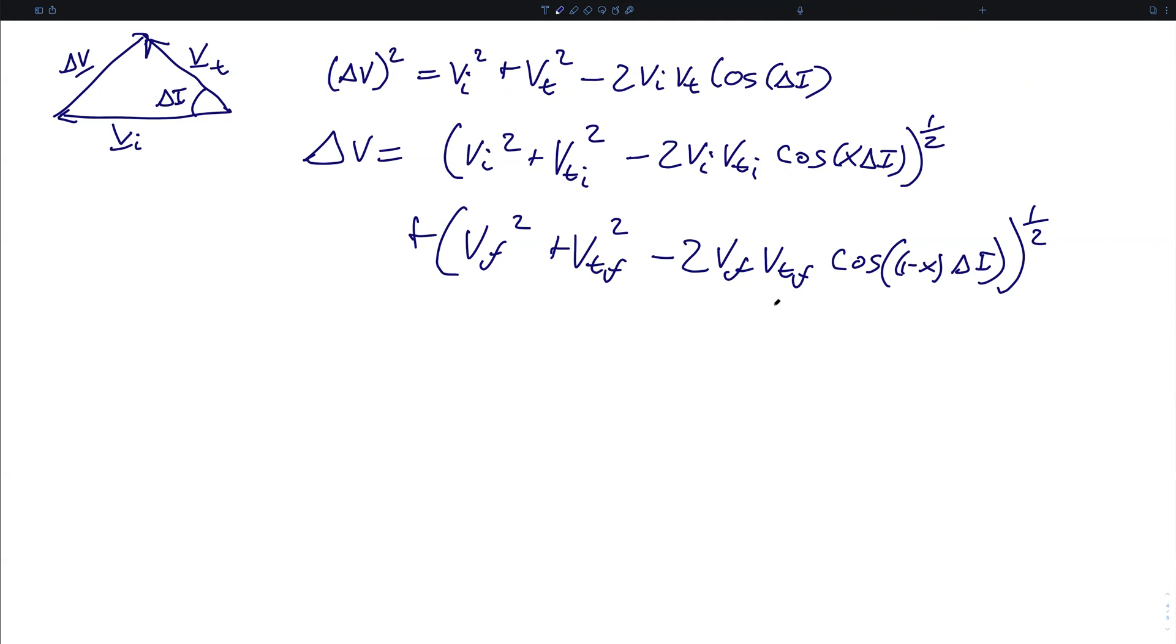So we have these two expressions of the cosine rule, and in this case, we're applying X delta I for the inclination change on the initial burn, and 1 minus X delta I on the inclination change on the final burn.